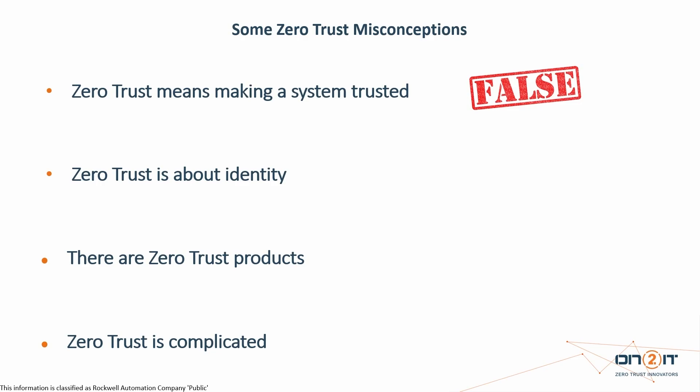There are a lot of myths about zero trust. The first one is that zero trust means making a system trusted. How much trust should there be in a zero trust system? Zero — we're trying to get rid of trust, not make systems trusted. Trust is a joke. You can read the trusted computing fact from Ross Anderson, and he will tell you that.